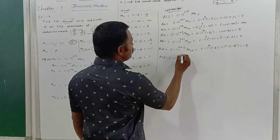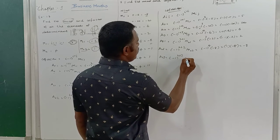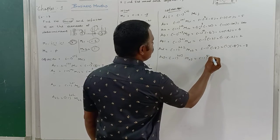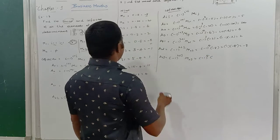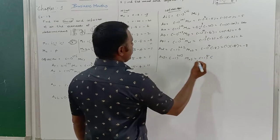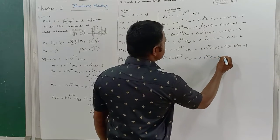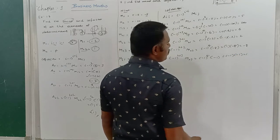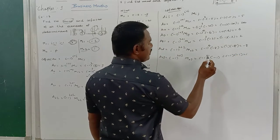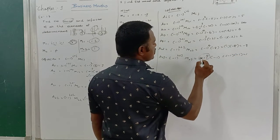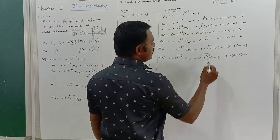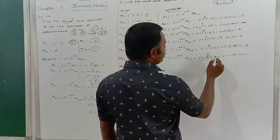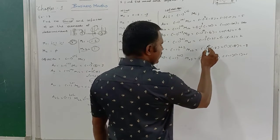A23 = (-1)^(2+3) × M23 = (-1)^5 × (minus 1). Since the power is odd, it equals minus 1, so minus 1 × minus 1 = plus 1. Remember: odd power gives minus 1, even power gives plus 1.